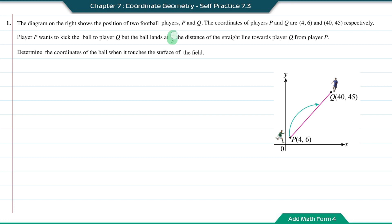Based on the information of the 2/3 here, this means the distance from P to Q is divided into 3 equal parts. From player P to the position where the ball lands, this will equal 2 equal parts. And from the ball to player Q, this will be equal to 1 part.